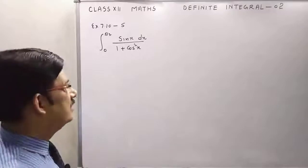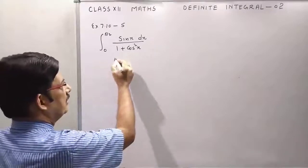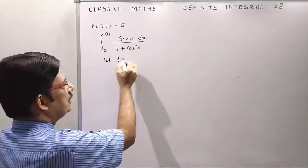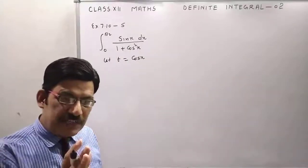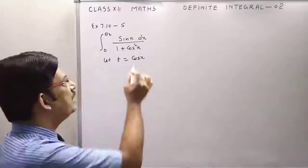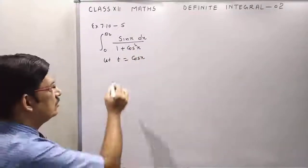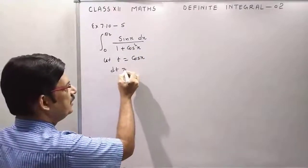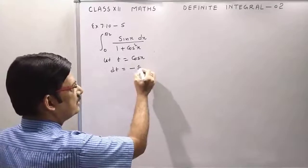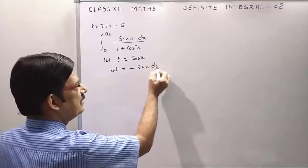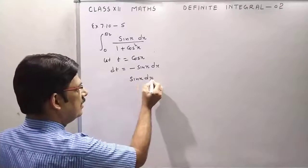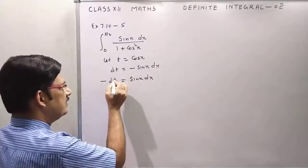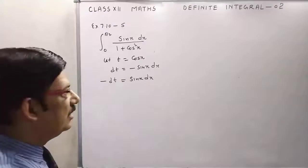Let t equal cos x. This is called substitution. We do this because we have the derivative of cos x, which is minus sine x, in the numerator. So first, differentiate: dt equals minus sine x dx. But we have only sine x, so sine x dx equals minus dt.